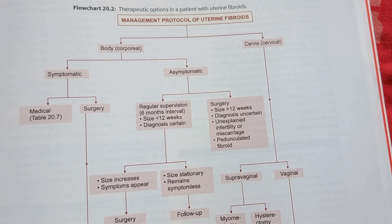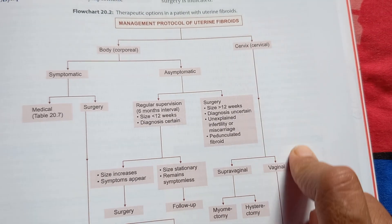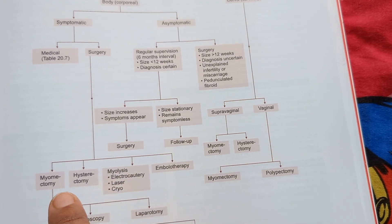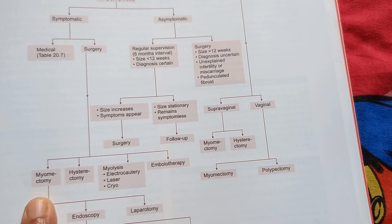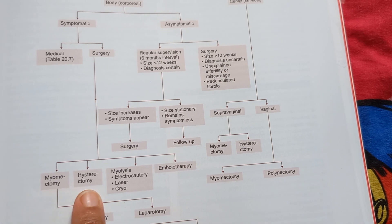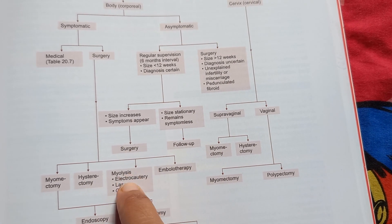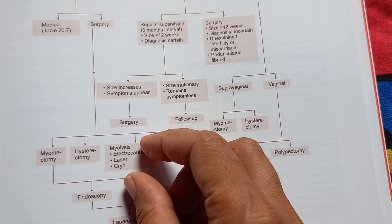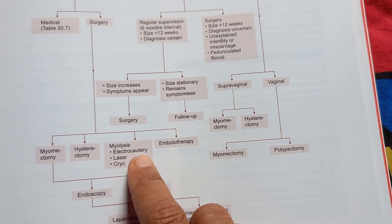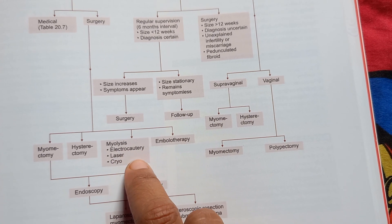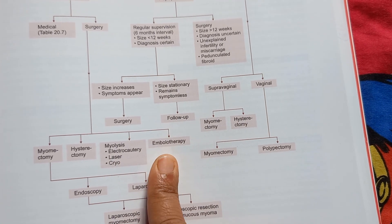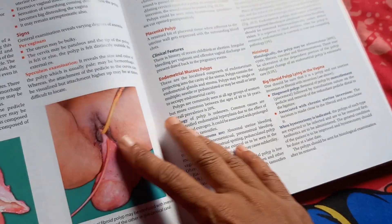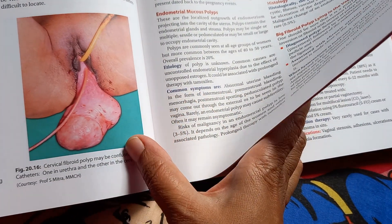You can call it a leiomyoma. If it is in the body of the uterus, you can do a myomectomy — just remove the myoma — or a hysterectomy to remove the uterus itself. There is also myolysis using laser, electrocautery, cryo, etc., and embolotherapy to stop blood supply to the leiomyoma. All these are options to treat uterine fibroids. There is also an image of a cervical fibroid polyp.